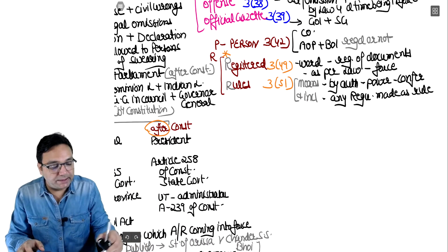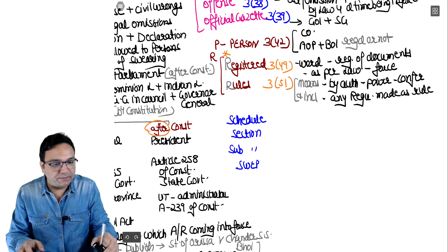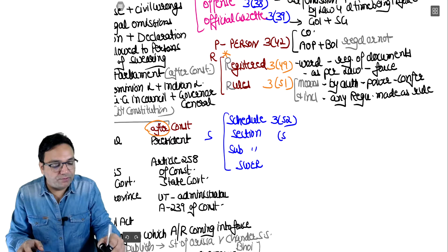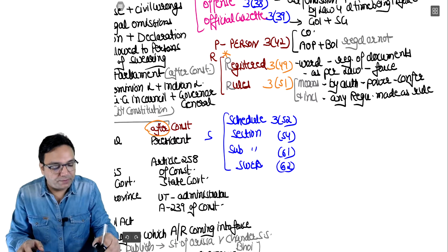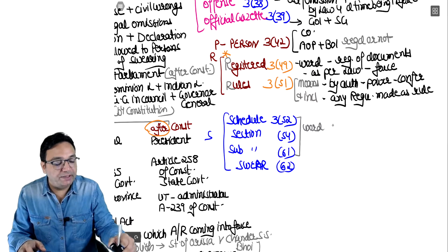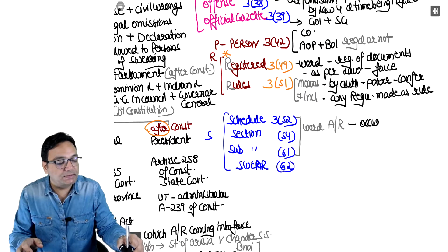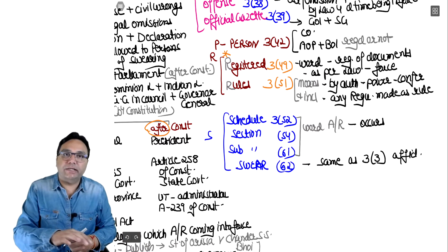After R comes S - schedule in subsection 52, section in subsection 54, subsection in subsection 61, and swear in subsection 62. For schedule, section, and subsection - all three are similar: wherever these words occur in any act or regulation, nothing special to explain. Swear's definition is also the same as affidavit - same as section 33. So three definitions - affidavit, oath, and swear - are the same.